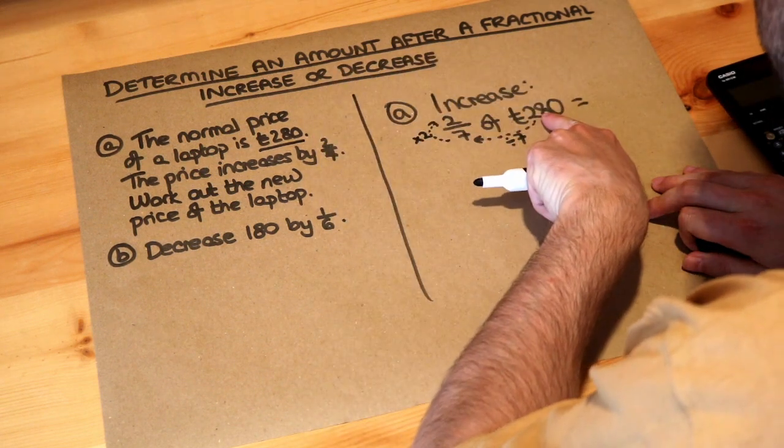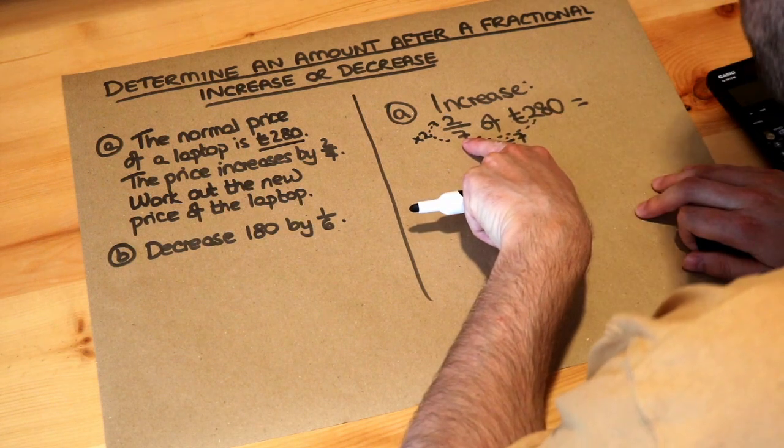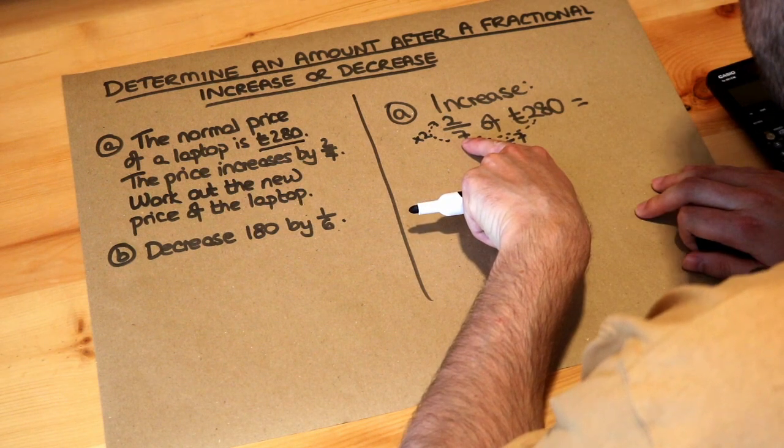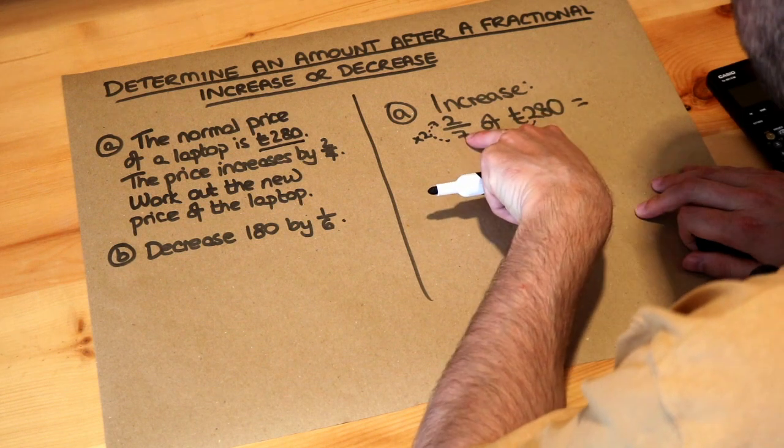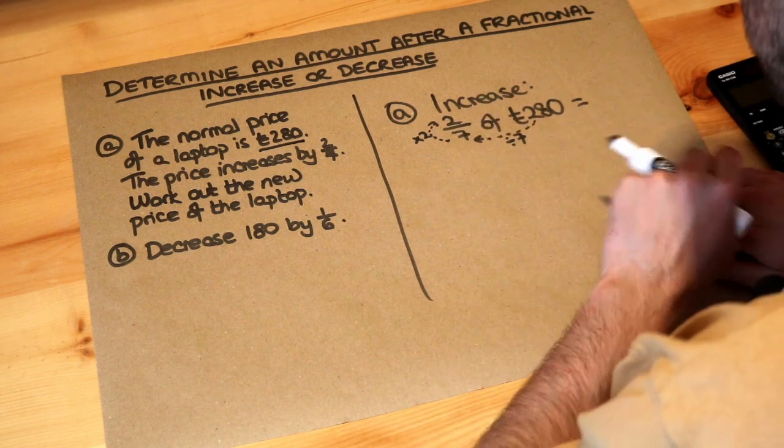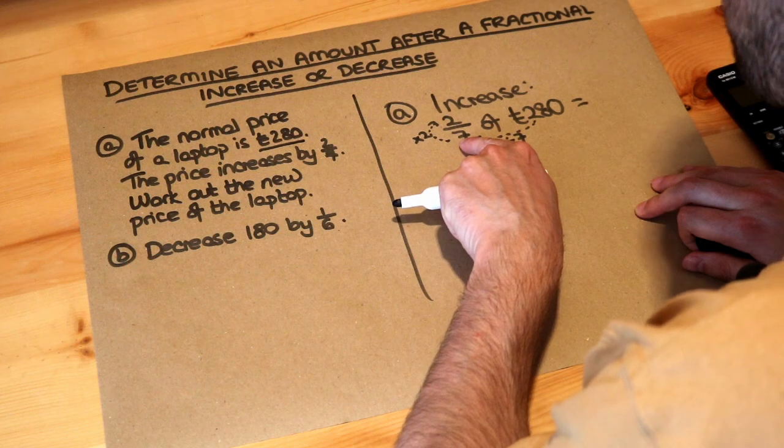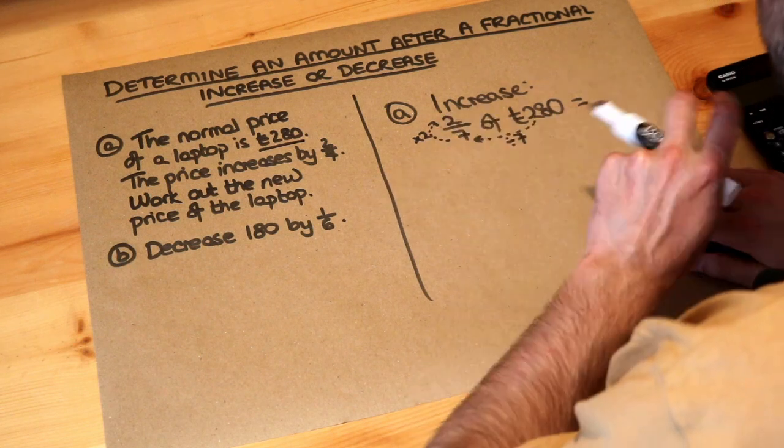So £280 divided by seven, you could do it on a calculator if you want, it's £40 because 28 divided by seven is four but we've got a zero on the end so it's £40. 40 times by that two is 80.